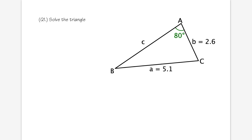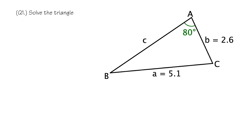In the first example, we will solve the triangle, meaning we find all missing sides and angles. We are given angle A = 80° and its corresponding side a = 5.1. We are also given side b = 2.6.